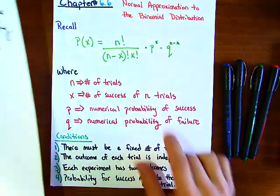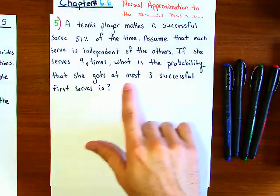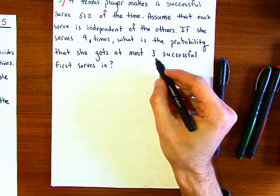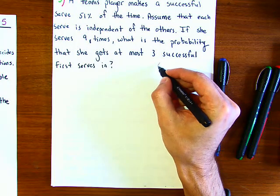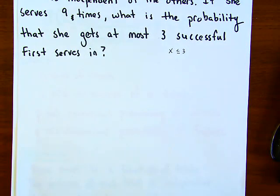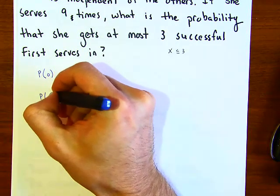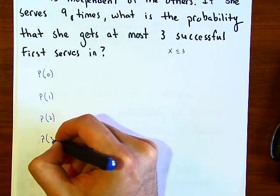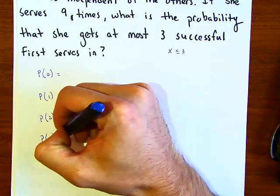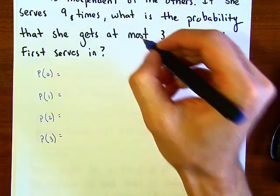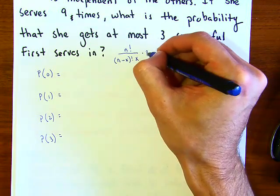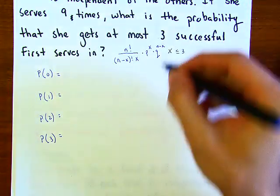To find the probability that she gets at most three successful serves, x must be less than or equal to three. So we need to find the probability of zero, one, two, and three. We'll calculate each using the binomial formula: n factorial over (n minus x) factorial times x factorial, times p to the x, times q to the n minus x.